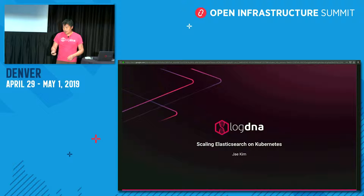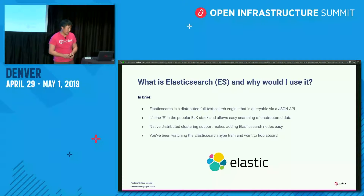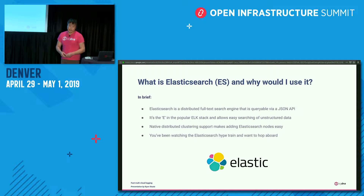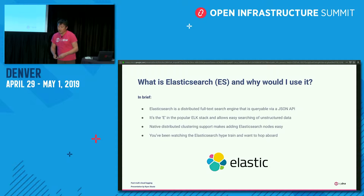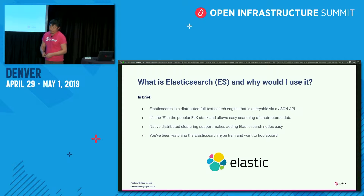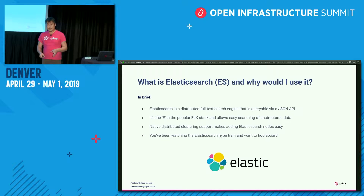Today we are going to focus on Elasticsearch on Kubernetes. Elasticsearch, generally speaking, is a full-text database — a JSON-queryable JSON document database, NoSQL as we're all very accustomed to. It's the E, sort of the middle and the foundation for the ELK stack. It actually has a lot of clever things that it does with respect to clustering — for example, it uses tribe nodes to save database state in a really clever way, and then you can query that across clusters.